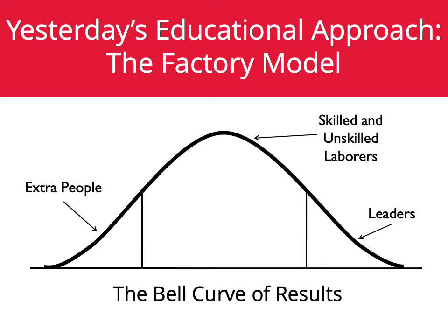To understand our facility needs, we must first review the previous models of education, which is why our current buildings function how they do. When these facilities were designed, education was developed under what is referred to as the factory model of education. Students moved class to class as if they were on a production line, and the goal was not about innovation or engagement, but rather to create a labor force of skilled and unskilled labor. Some learners excelled and became leaders, most fell into the middle, and then there were those who didn't fit the model and could not succeed.